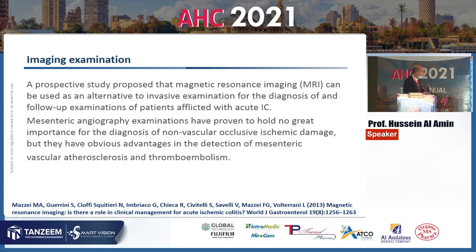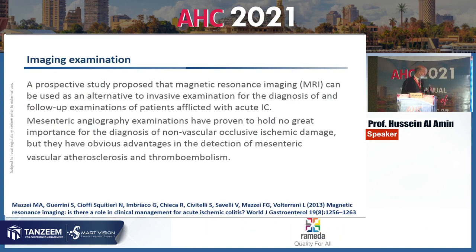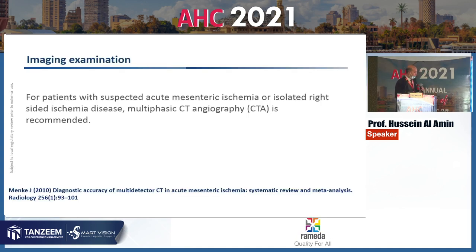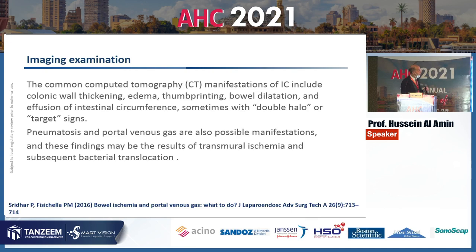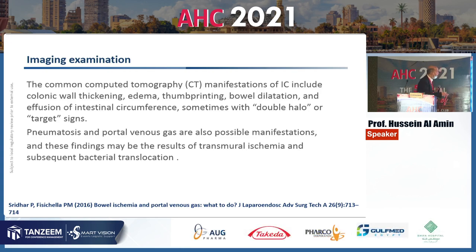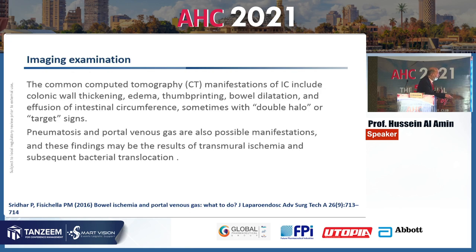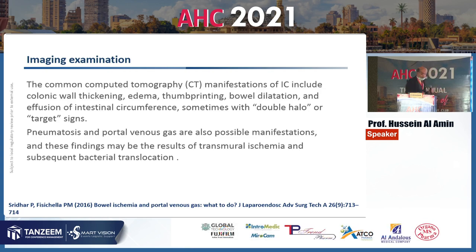MRI can also be used as an alternative diagnostic tool. Mesenteric angiography is of value in patients with atherosclerosis or thromboembolism and is especially important in isolated right colonic ischemia. CT abdomen with contrast is one of the most important diagnostic tools; pneumatosis intestinalis and portal vein gas are possible findings suggesting transmural ischemia and subsequent bacterial translocation, though these signs are not specific and can occur in IBD, pseudomembranous colitis, radiation colitis, drug-induced colitis, and AIDS colitis.